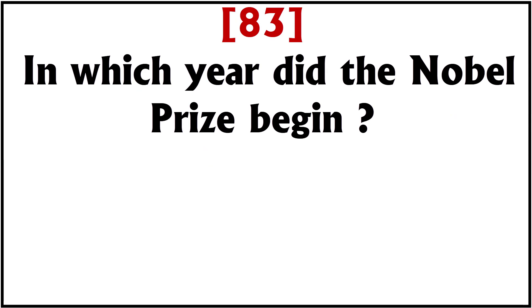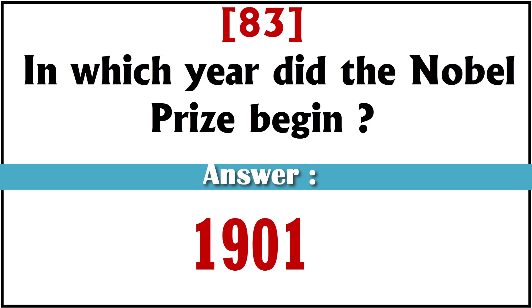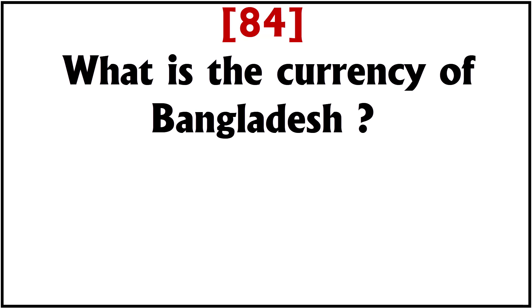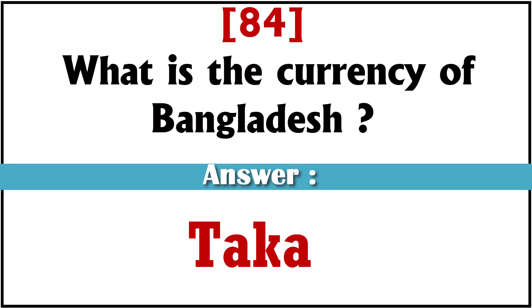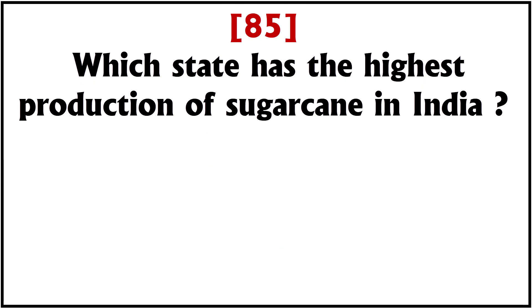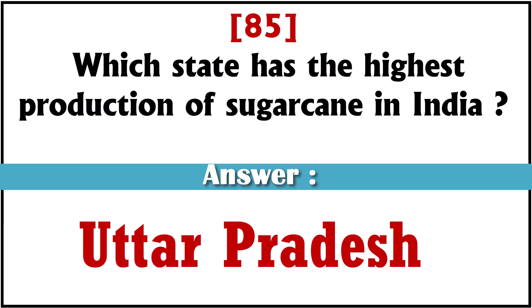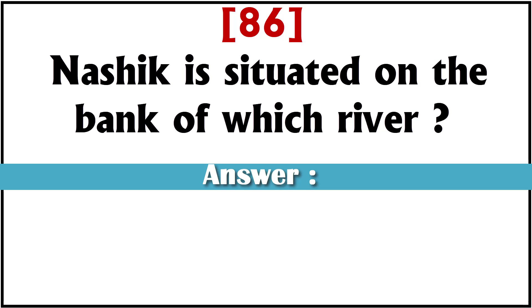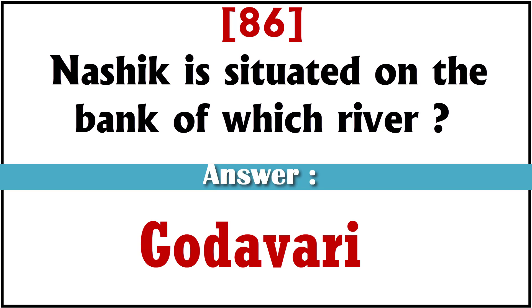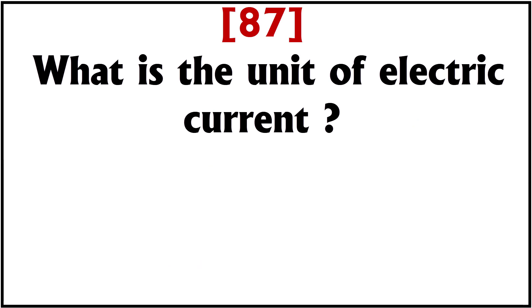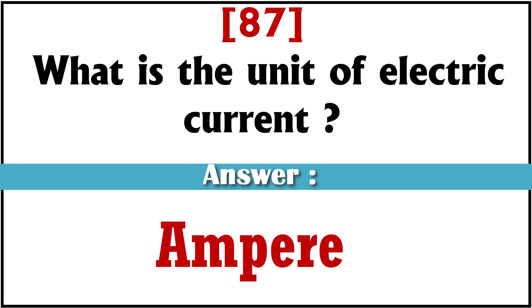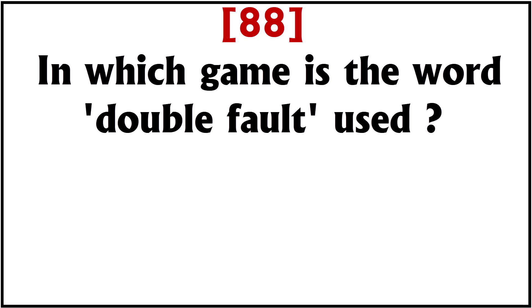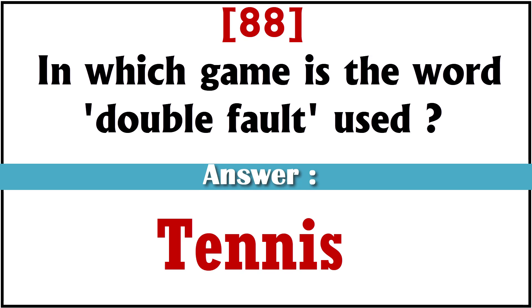In which year did the Nobel Prize begin? 1901. What is the currency of Bangladesh? Taka. Which state has the highest production of sugarcane in India? Uttar Pradesh. Nasik is situated on the bank of which river? Godavari. What is the unit of electric current? Ampere. In which game is the term double fault used? Tennis.